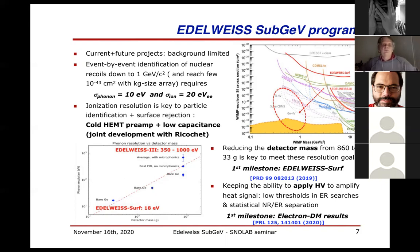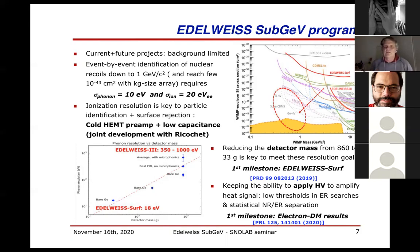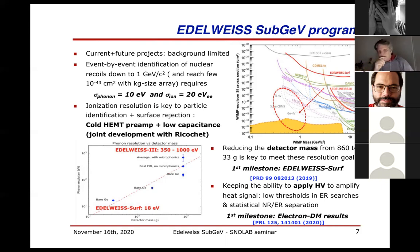This is slightly below the reach of future experiments like SuperCDMS and CRESST phase three. What we want to do is get there while keeping as much as possible the discrimination between nuclear and electron recoil. The performance we need is a heat-channel resolution of typically 10 eV and an ionization resolution of 20 eV. That would make it possible to reach that kind of region with a one-kilogram-sized experiment.